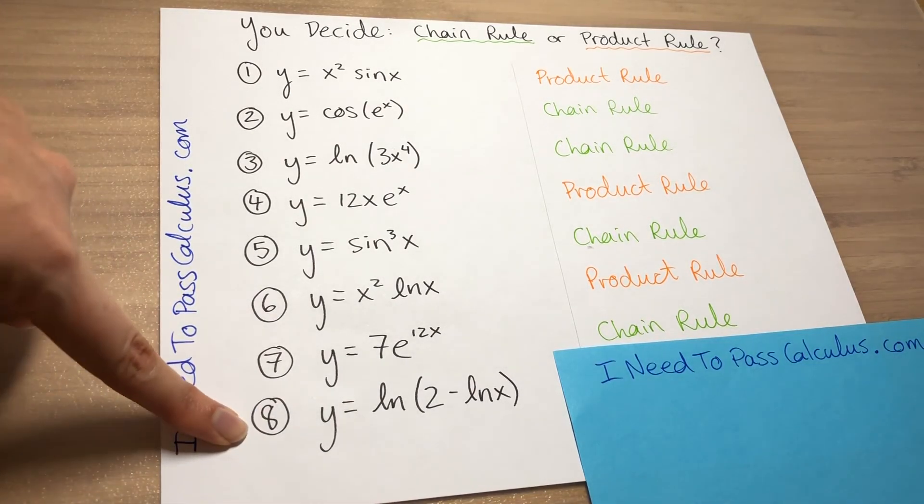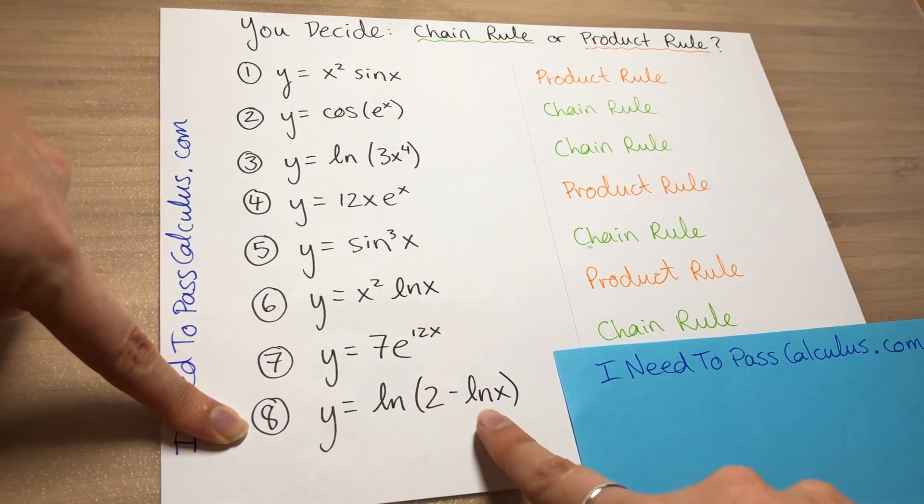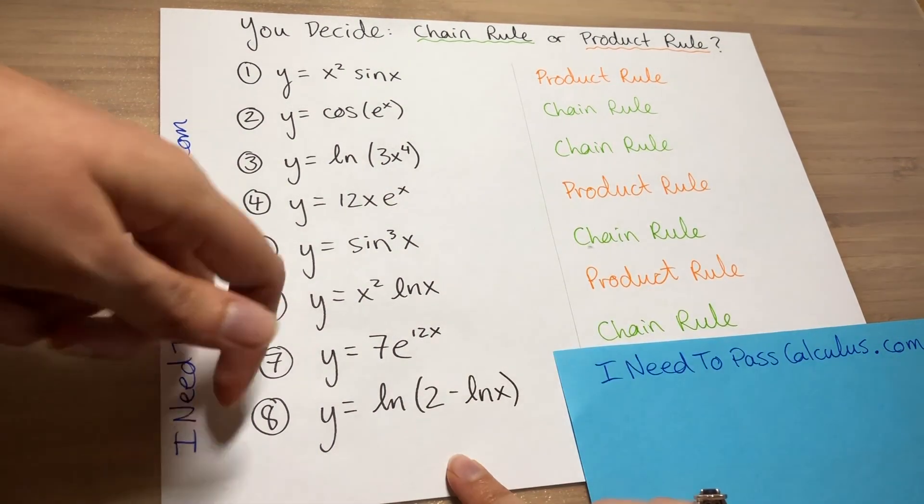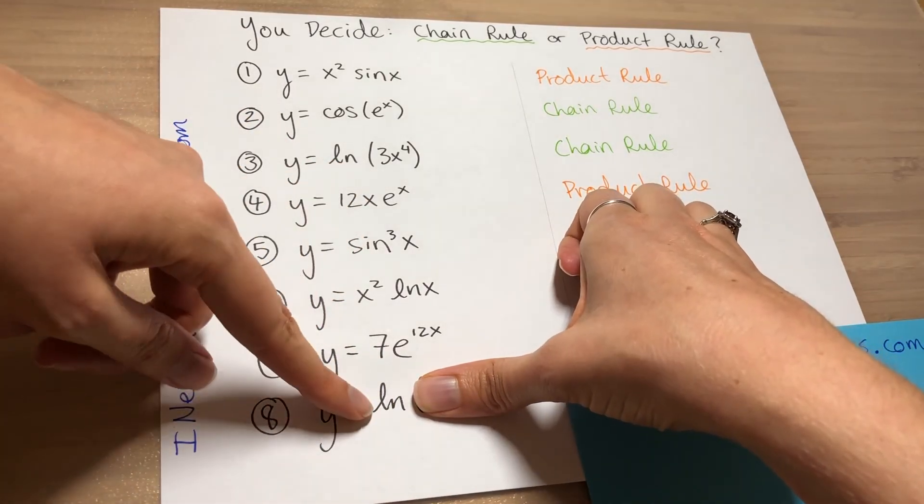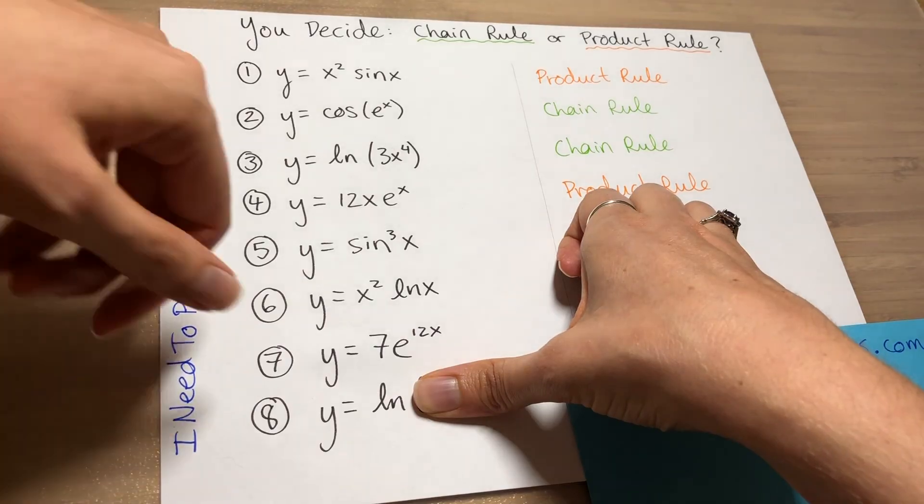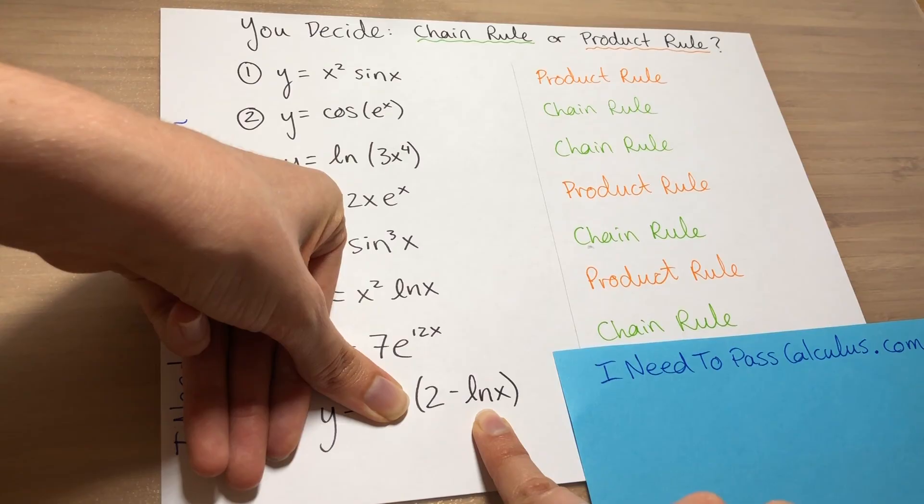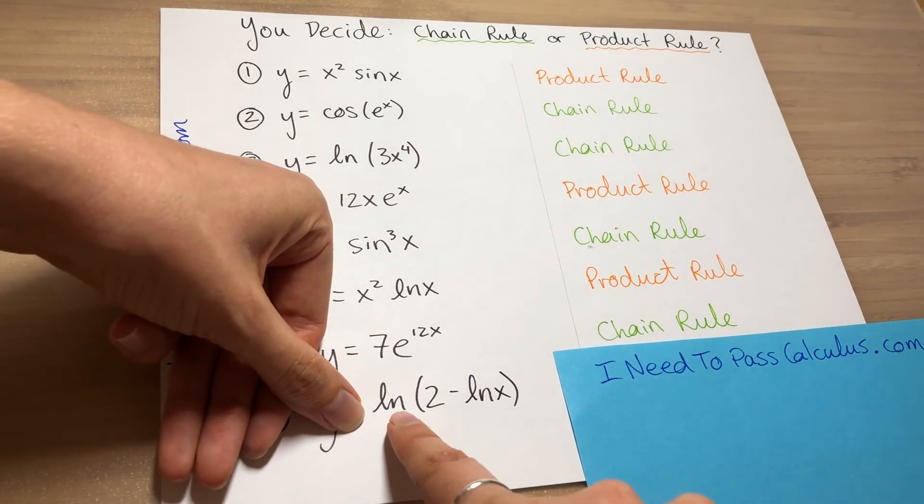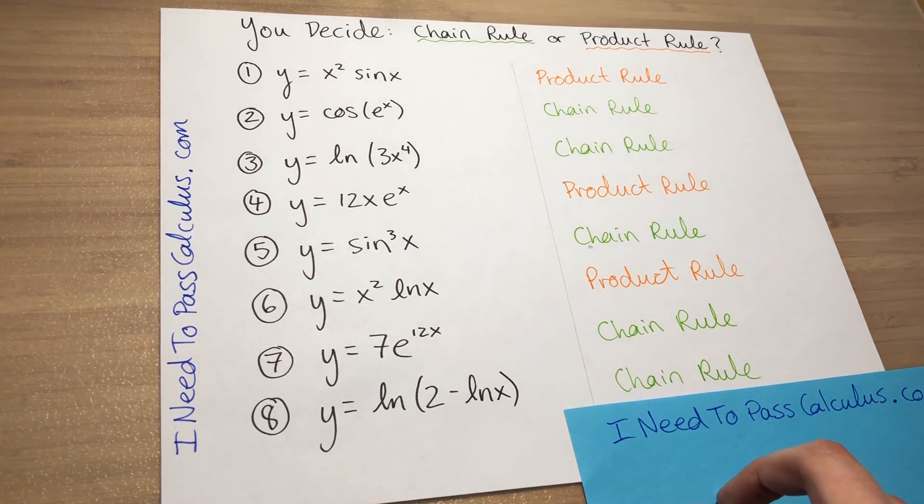And for our last problem, problem eight. For this problem, we look at our two main parts of this function, and we have a plain old ln, and we have a 2 minus ln x. And ln without any variables is not a standalone function. This part, 2 minus ln x, is perfectly fine as a standalone function. And so that's a hint that since this guy is not a standalone function, this has to be the chain rule. We have some nesting in that problem.